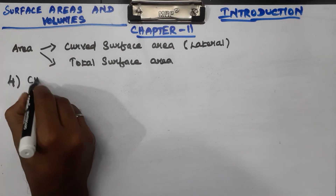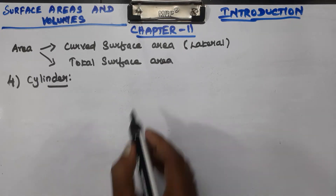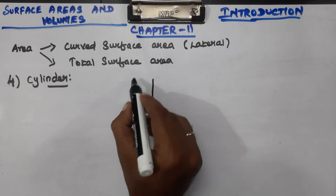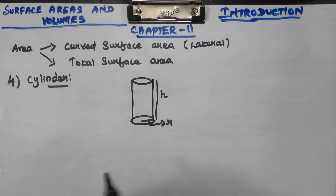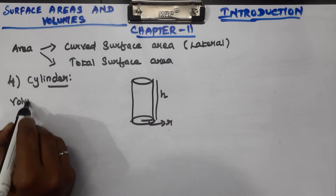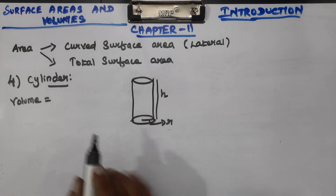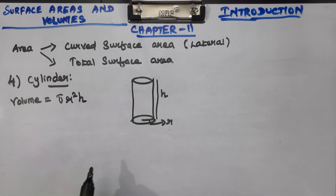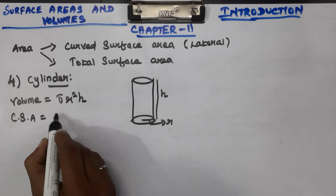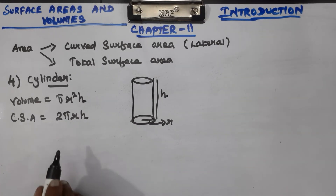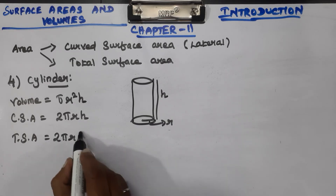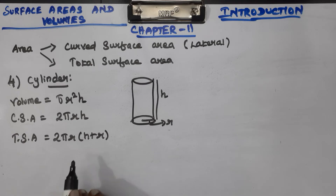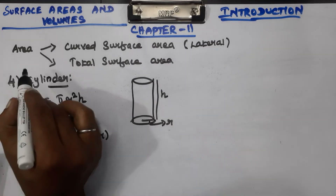The fourth shape is the cylinder. A cylinder has a height and radius r. The volume of a cylinder is π r² h. The curved surface area is 2 π r h. The total surface area formula is 2 π r (h + r). These cylinder formulas are very important to learn.